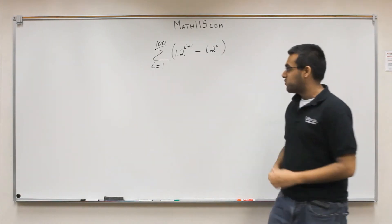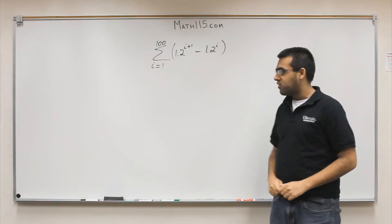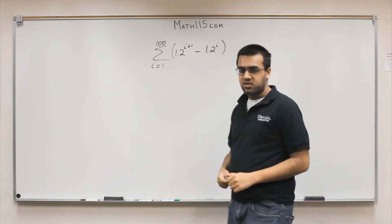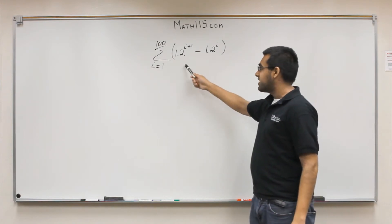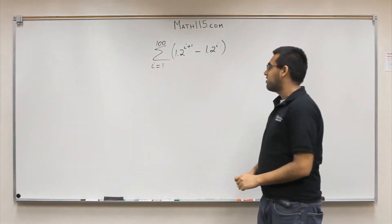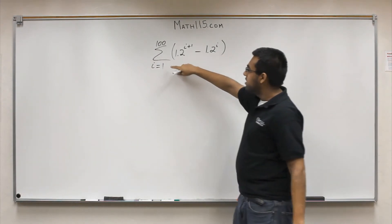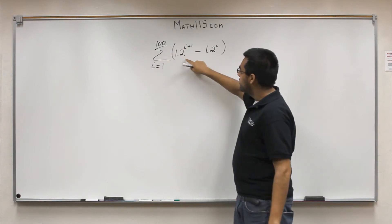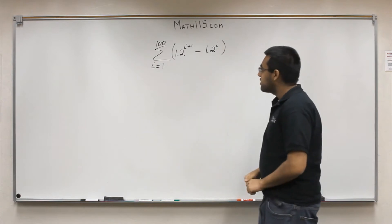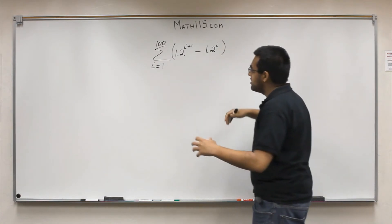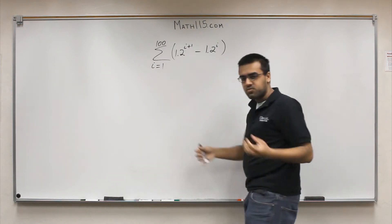Hello everybody. So now we're going to work on a more difficult problem. This is going to involve a lot of the different properties — actually all four of the properties that we went over in the first video. So this will involve re-indexing, splitting things up into different parts, and a lot of different things. Right here we have a summation from 1 to 100, and we're going to need to find a way to break these up to cancel out some things and simplify.